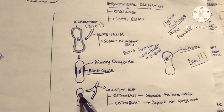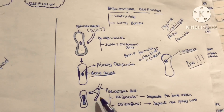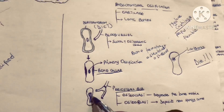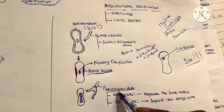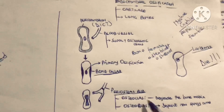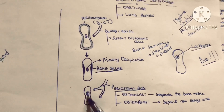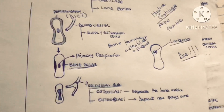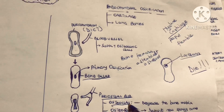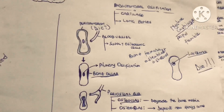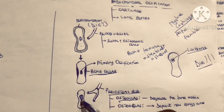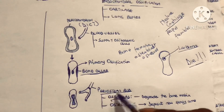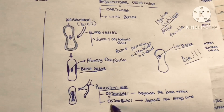Nature doesn't want these dead chondrocytes to remain there. So the cartilage will be invaded by a blood vessel called the periosteal bud. The periosteal bud will supply the area where the dead chondrocytes are found with two types of cells: osteoclasts, which break down bone and remove the dead chondrocytes, and osteoblasts.